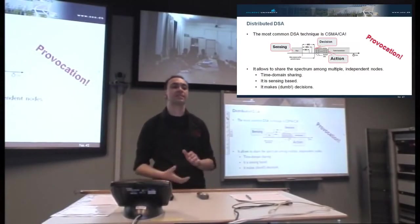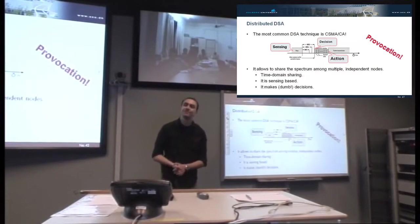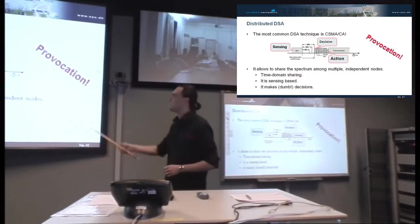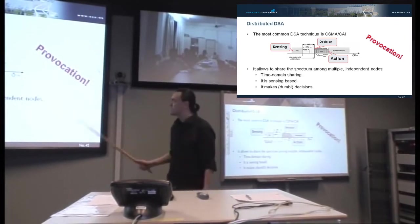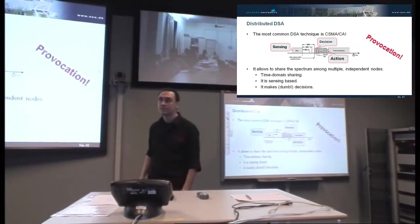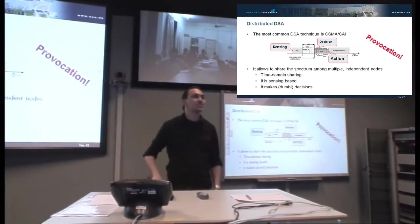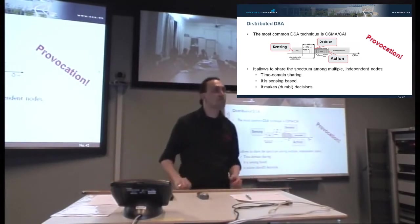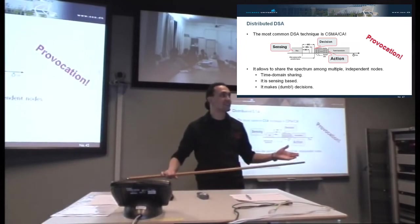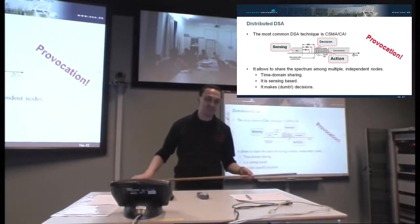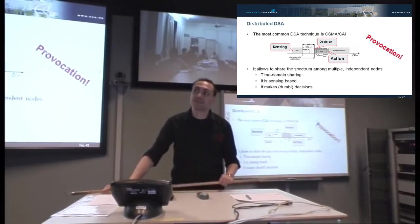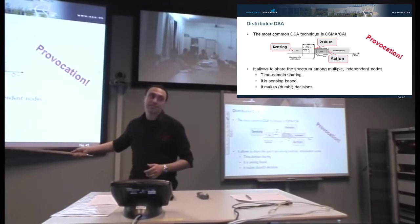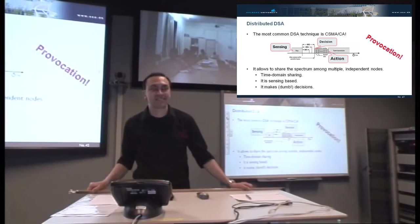This is a distributed dynamic spectrum access technique as old as the world. That's what Wi-Fi does every time you switch it on - dynamic spectrum access in time domain sharing. It is sensing based and makes decisions about using another spectrum. The decision is dumb, but it makes a decision. So we can say Wi-Fi is cognitive? No, of course not, this is just a provocation. We need something more advanced because it's completely inefficient - we are under 40% of the possibility of usage of the spectrum.